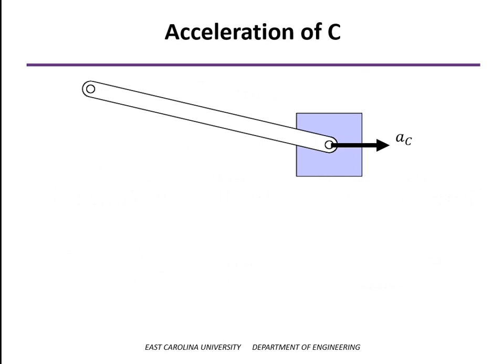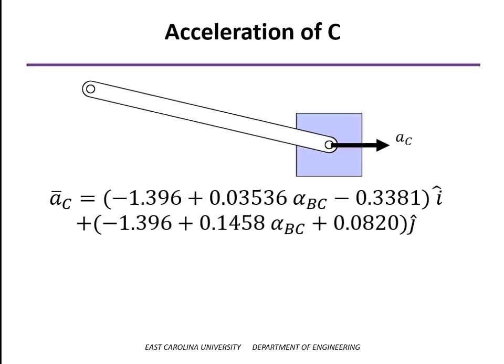Just like with the velocity analysis, when we come to point C, the slider is restricted to move only in the x direction. So its j component of acceleration is going to be equal to zero, or the y component of the acceleration of that block is equal to zero. And that allows us to solve for alpha.